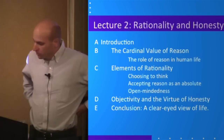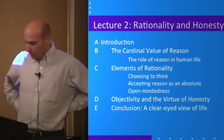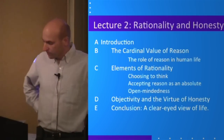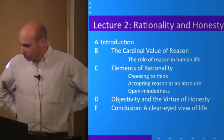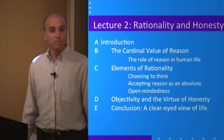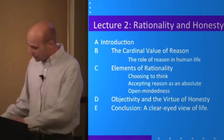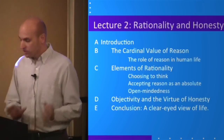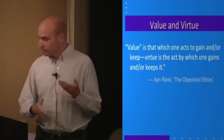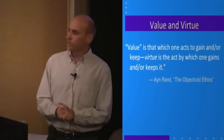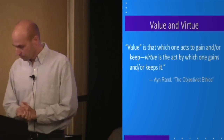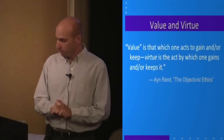Rationality is the primary virtue because it's the virtue of employing one's reason as a guide to action. Reason has a special status in the Objectivist view of man—it's the defining characteristic of human beings and one of Ayn Rand's cardinal values. To understand the relationship between reason and rationality, consider how Rand distinguishes value from virtue: a value is that which one acts to gain and/or keep, and virtue is the act by which one gains and/or keeps it.